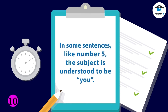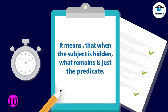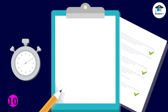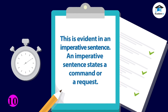In some sentences, like number 5, the subject is understood to be 'you.' It means that when the subject is hidden, what remains is just the predicate. This is evident in an imperative sentence. An imperative sentence states a command or request.